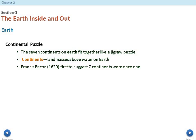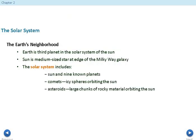There are seven continents on Earth that fit together like a jigsaw puzzle. These continents are land masses above the water. Francis Bacon in 1620 was the first to suggest that seven continents were once one together - he's the guy that comes up with Pangaea. Now we're going to look at the solar system. Here's a short video.